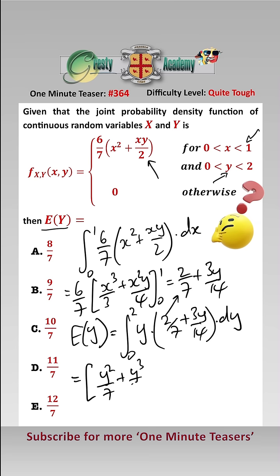Between 2 and 0, which equals 4/7 + 8/14, which equals 8/7, which is answer A.